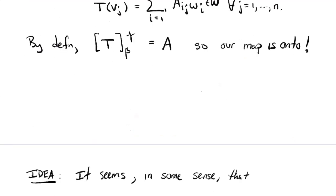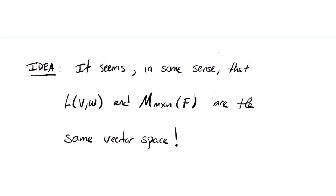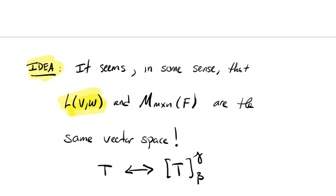There's a lot to digest here. This vector space of linear transformations L(V,W) and the vector space of M by N matrices — they kind of seem like they're the same in some sense. Certainly not literally: one is a set of functions, the other a set of matrices. But there is a natural correspondence, and algebraically they behave the same. We'll make this more precise as we go. Thanks for listening.